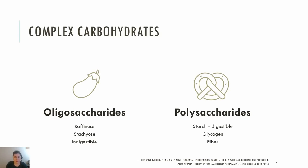Let's review the complex carbohydrates, which include oligosaccharides and polysaccharides. The oligosaccharides include raffinose and stachyose, and you can find these in onions, cabbage, whole wheat products, and legumes. These oligosaccharides pass largely undigested into the large intestine, where bacteria metabolize them and produce intestinal gas and other byproducts.